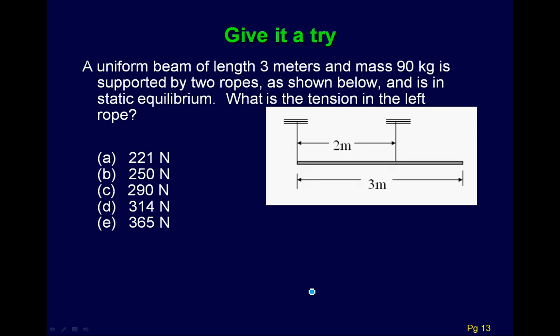Let's give you one to try. So here I have a uniform beam of length 3 meters and mass 90 kilograms. And it's supported by two ropes, as shown below. And it's in static equilibrium. What is the tension in the left rope? So go through and try to figure out this one.